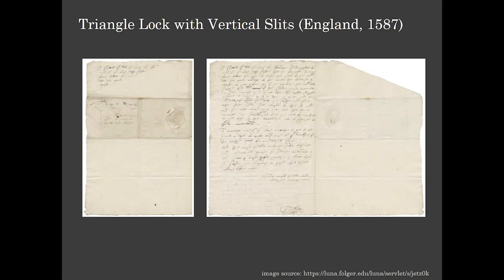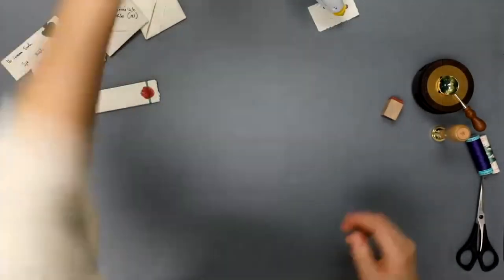Okay. So this is the last model that we're going to do. This is called a triangle lock with vertical slits. And this particular example is from England in 1587. And I am going, this is the most secure of the kind of locks that we're going to do today. And I'm going to show you a couple of reasons for that. Okay. So I've got my letter here. And the first thing that I'm going to do is I'm going to cut my lock. It's going to be a paper lock. I'm going to cut it out of there. And this doesn't have to be anything precise.